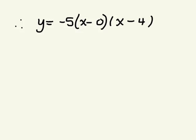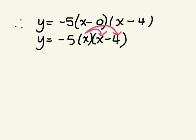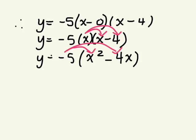Turn this into standard form. What's x take away nothing? x times x take away 4. Same thing as we just did before. Distribute. x times x. x times negative 4. Negative 4x. Now we have to distribute our negative 5. So final answer, y equals negative 5x squared plus 20x, because negative times negative.